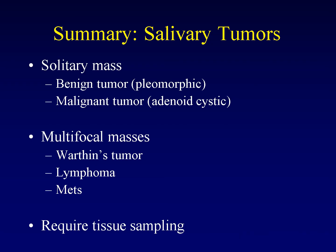This brings us to our summary of salivary tumors. When confronted with a salivary mass, it is useful to divide your differential diagnosis into solitary masses and multifocal masses. A solitary mass is either going to be benign or malignant. If benign — which is most common in the parotid gland — it is most likely a pleomorphic adenoma. If malignant — which is more common in the smaller glands — it is likely to be mucoepidermoid carcinoma or adenoid cystic carcinoma. Mucoepidermoid carcinoma is most common in the parotid gland, while adenoid cystic carcinoma is slightly more frequent in the smaller glands.